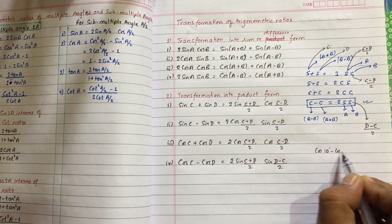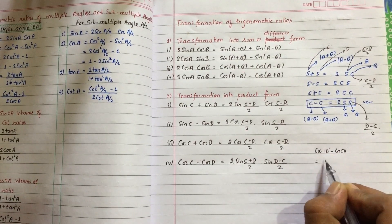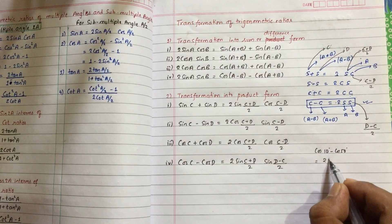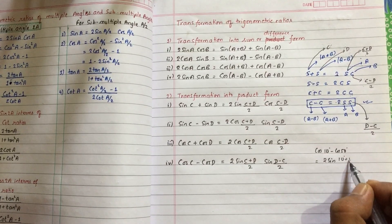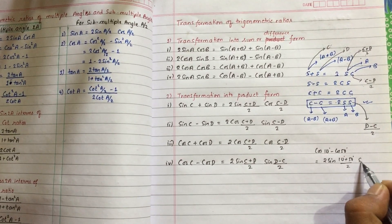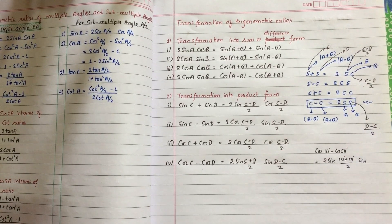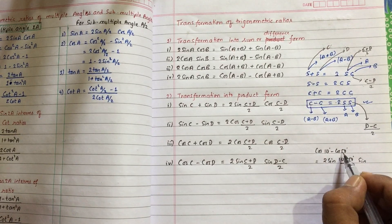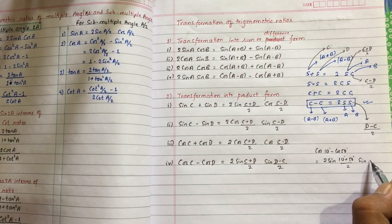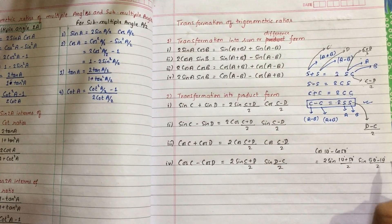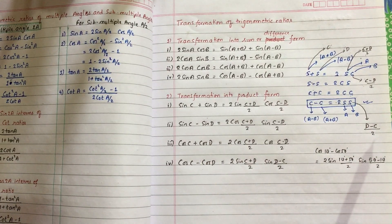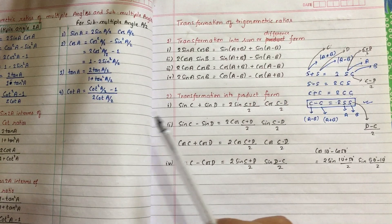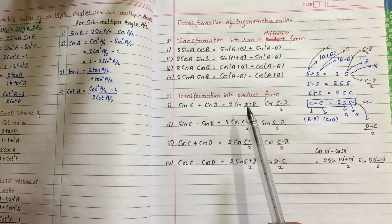For cos minus cos, this formula is called 2SS, which equals 2 sin((C+D)/2) sin((D−C)/2). The sign of d minus c by 2 is the key trick here. This formula will be used in the trigonometry chapter.